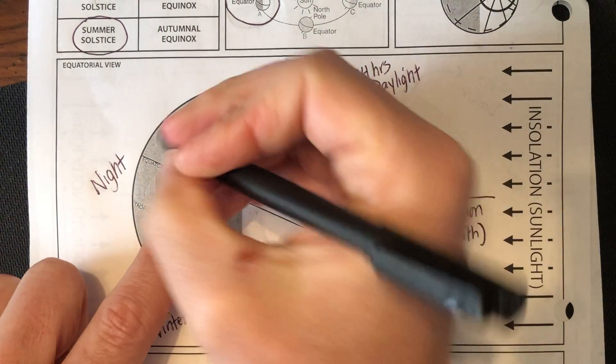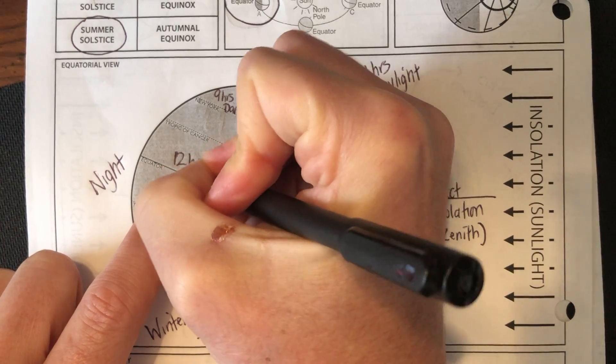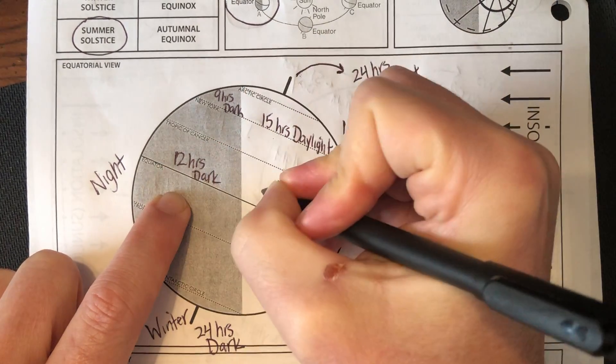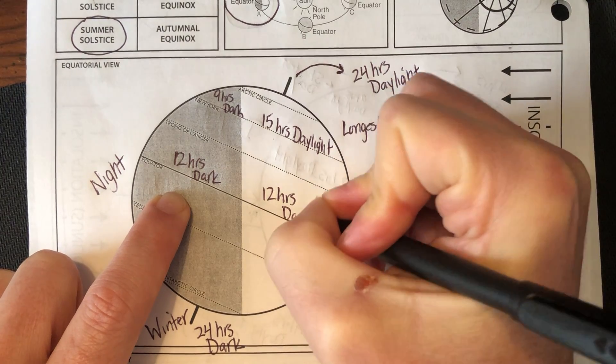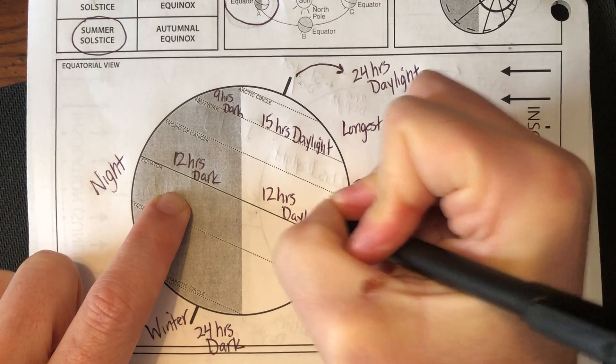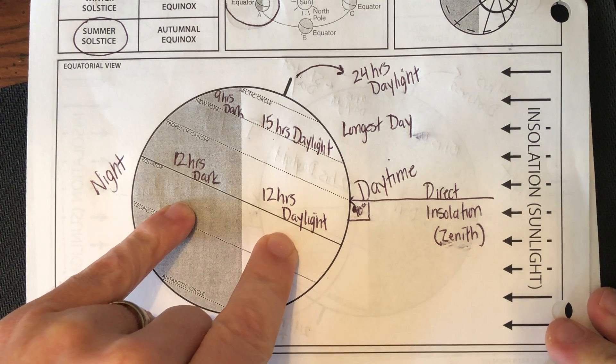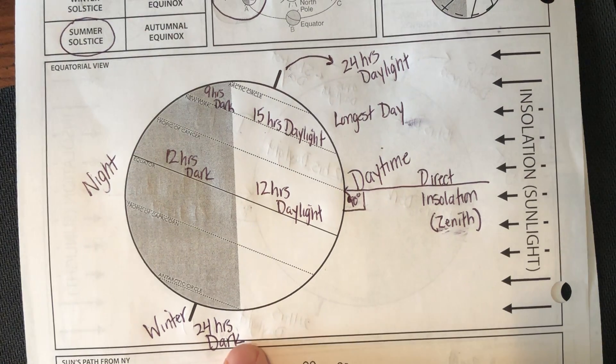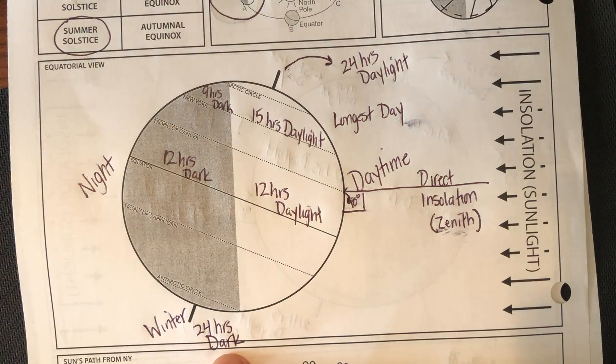The equator gets 12 hours of darkness and 12 hours of daylight. Same thing in the winter, same thing in the summer. Equator means equal.